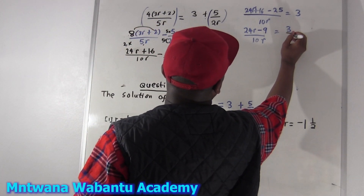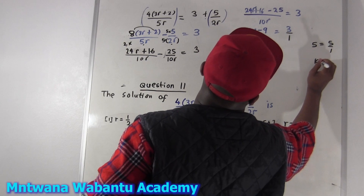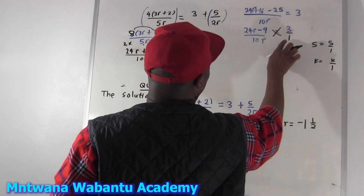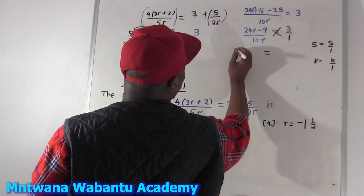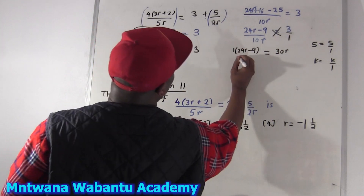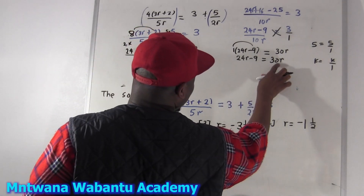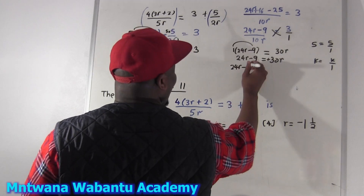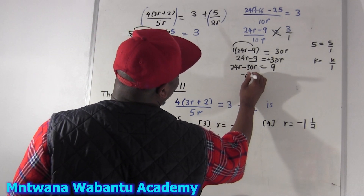So when you arrive there, you do cross multiplication. Write 3 as 3 over 1 because you want to cross multiply. Take this group and multiply by that group — that's a cross. So 1 times 24a minus 9 equals 10a times 3, which is 30a. So 24a minus 9 equals 30a.